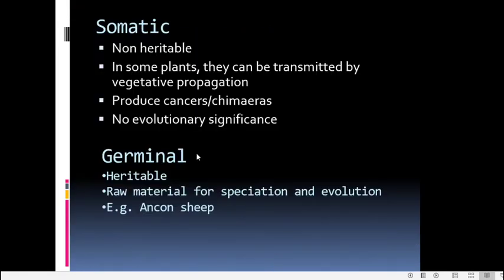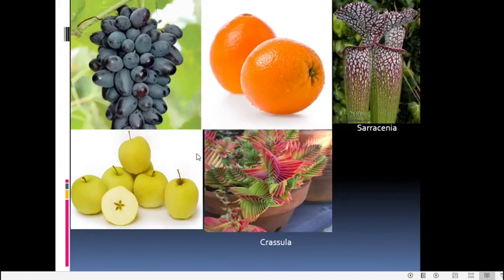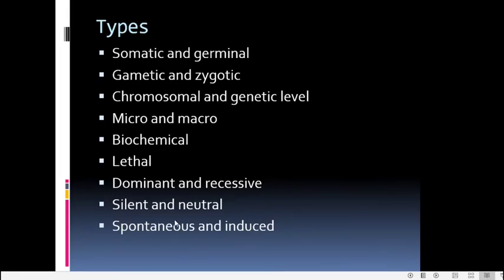The last category is spontaneous and induced mutations. Spontaneous mutations are natural, occurring at low frequency without any definite cause — a random process. Induced mutations are man-made, induced by the application of certain physical, chemical, or biological agents. The production of mutations by artificial means is called mutagenesis.